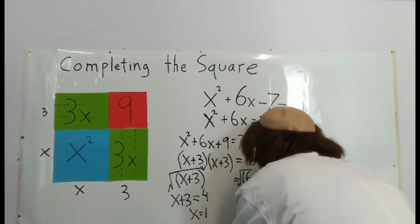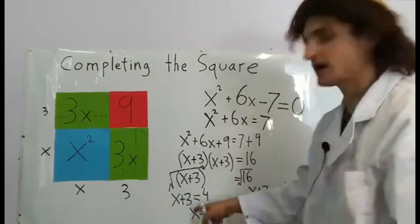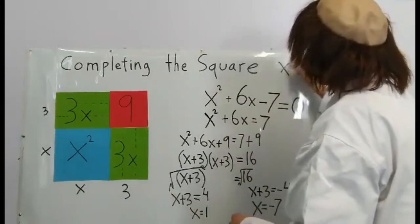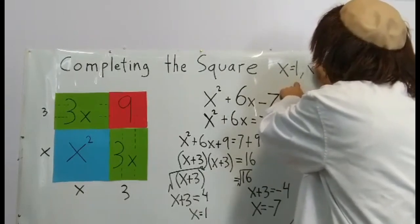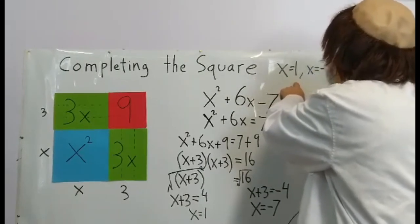Here are our answers: we have x = 1 and x = -7.